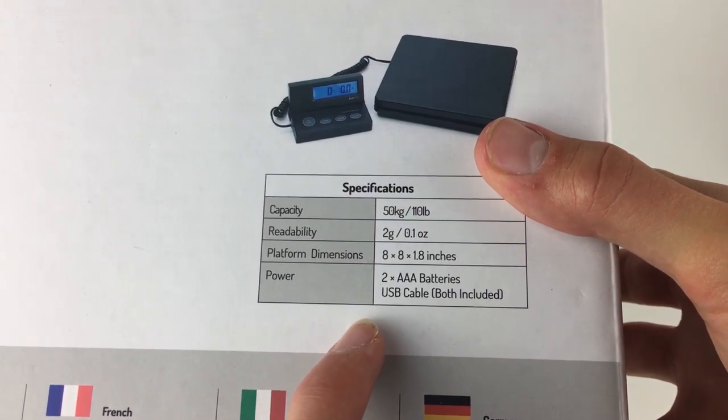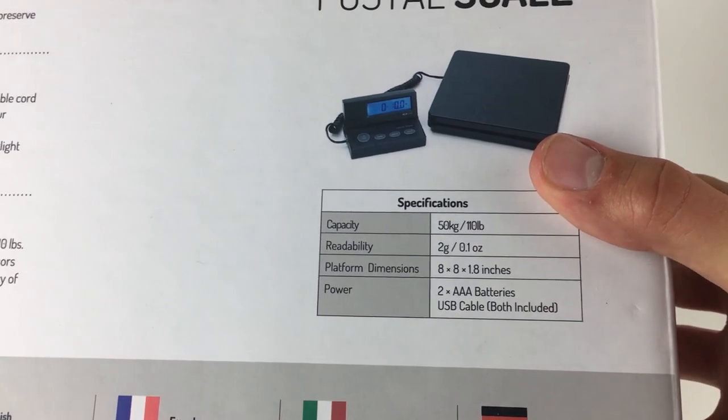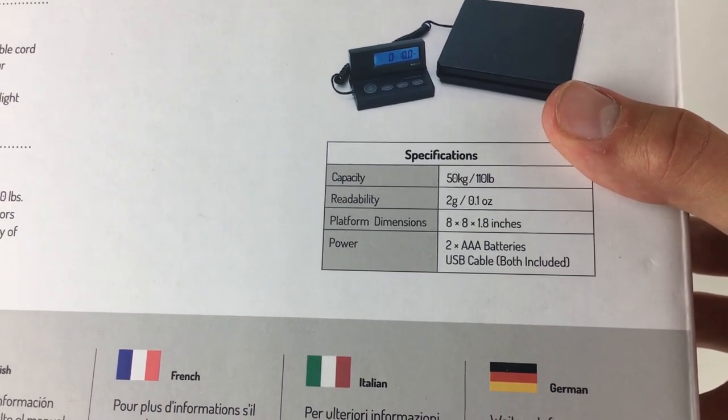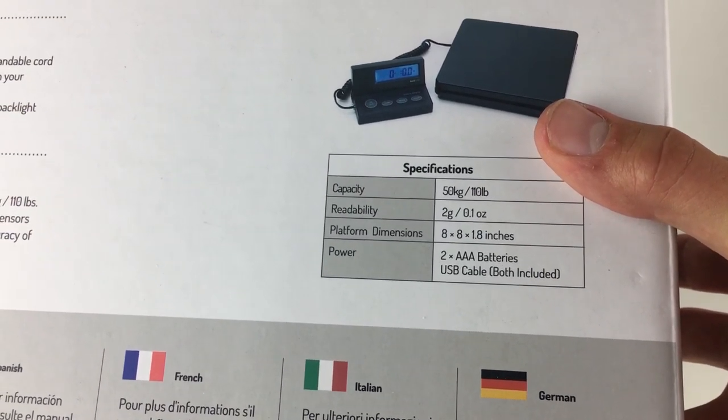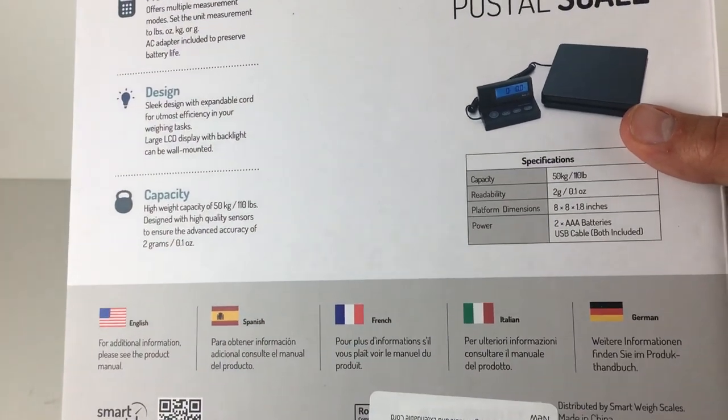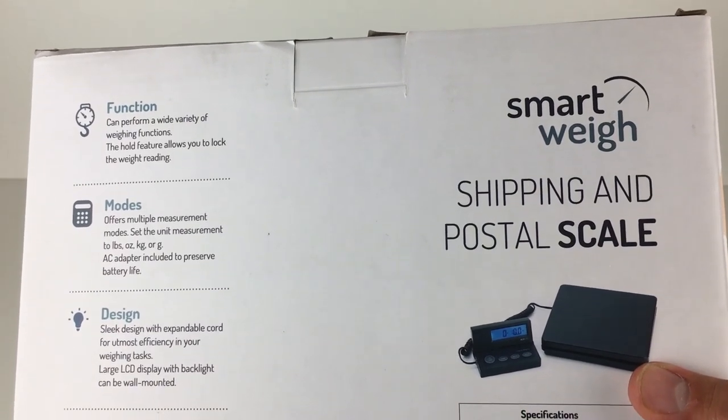It's also important to note that it does come with two AAA batteries, but they are kind of a slightly third-party brand or lesser brand, so you may want to change them out at some point and then put some better branded ones in there that may last a bit longer. But yeah, so that's essentially the box and we will get on with the meat of the review now in looking at the actual scale.